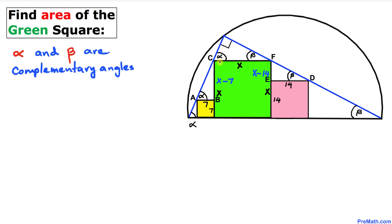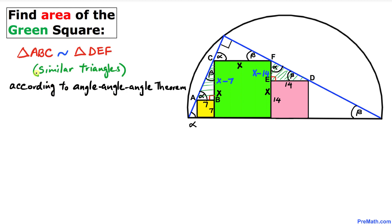Since the angles are 90 degrees at the corners of the squares, if one angle is alpha the adjacent angle must be beta, because alpha and beta are complementary. Similarly, if one angle is beta the adjacent is alpha. With all three angles matching, triangles ABC and DEF are similar triangles according to the Angle-Angle-Angle (AAA) theorem.